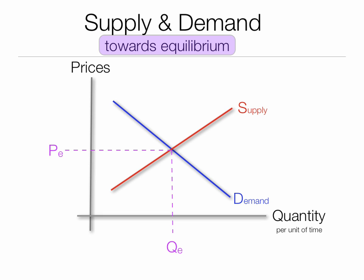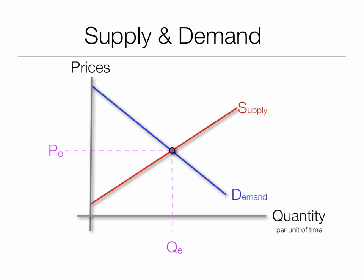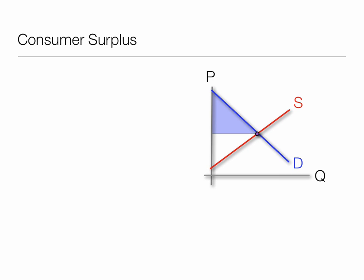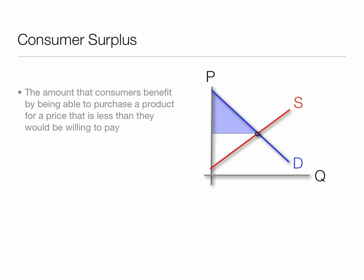Another useful concept we're going to talk about throughout the semester is consumer surplus. The blue area is the area defined by consumer surplus. If you look at the demand curve, you'll find that there are people who will buy the product above the equilibrium price. Producer surplus is the area below the equilibrium price, which you see by the pink area. Consumer surplus is the amount that consumers benefit by being able to purchase their product for a price that is less than they would be willing to pay.